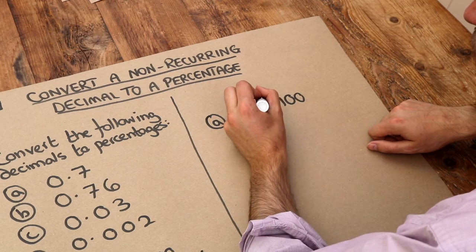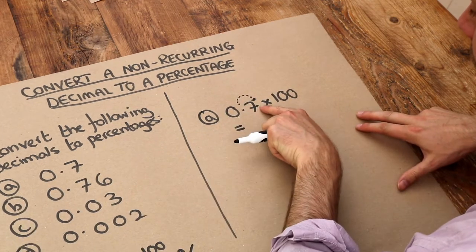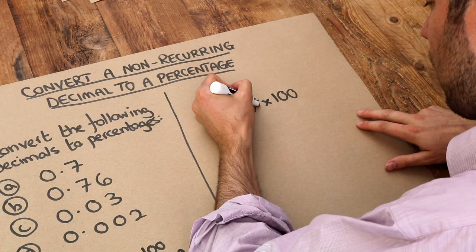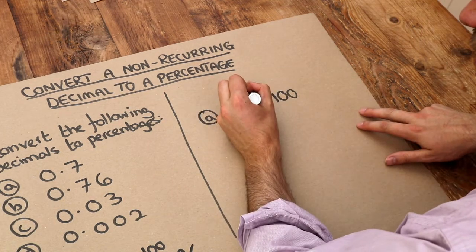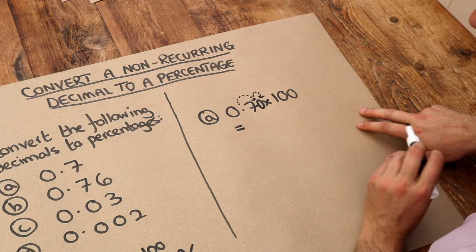Now I've run out of digits at the end, but can you see if I put a zero there, then that allows us to move the decimal point one more place.